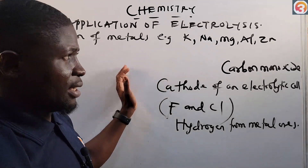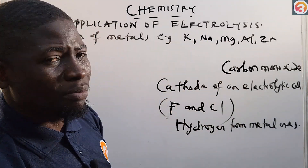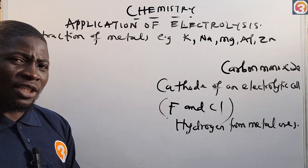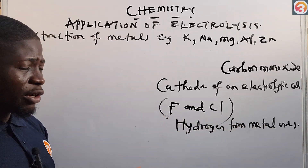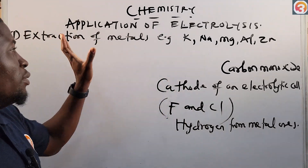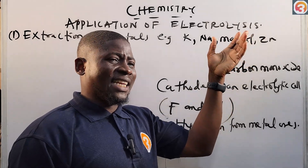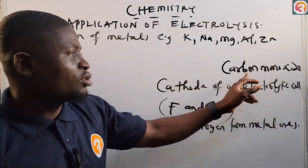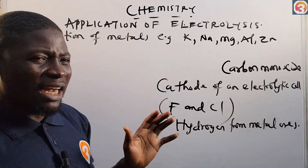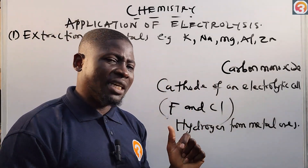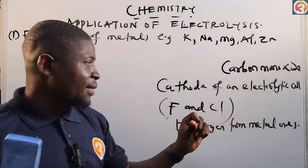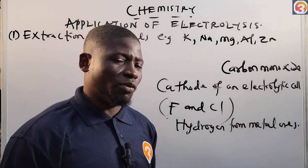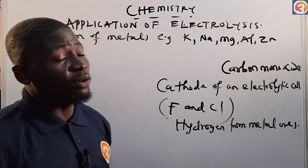So, to summarize: extraction of metals from ores — examples are calcium, sodium, magnesium, aluminium, and zinc. These metals form very stable compounds that cannot be easily reduced by simple reducing agents like carbon monoxide; they can only be reduced by the cathode of an electrolytic cell. Electrolysis can also be used to obtain halogens like fluorine and chlorine, and hydrogen from metal ores.